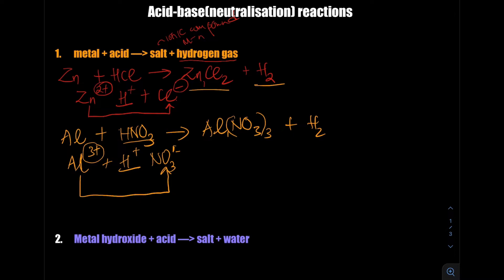We should make sure our equations are balanced. For the first one — zinc with HCl — we have one zinc on each side. But we have one hydrogen on the left and two on the right, so let's put a coefficient of 2 in front of HCl. That gives two hydrogens in the reactants and two in the products. And then two chlorines on each side — that equation is balanced.